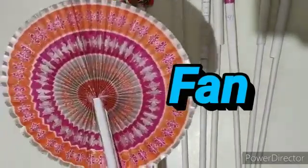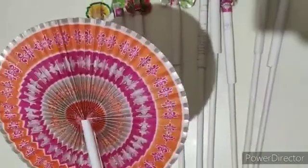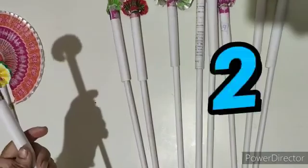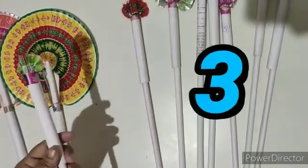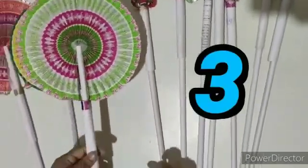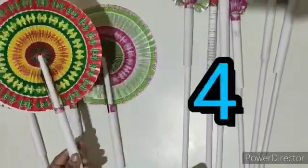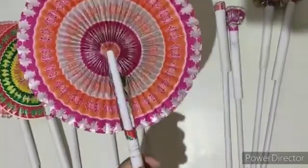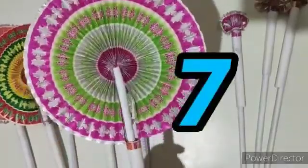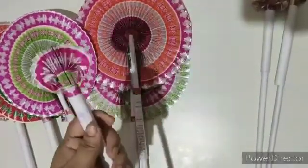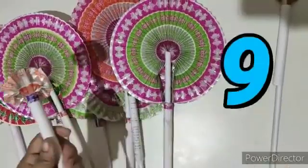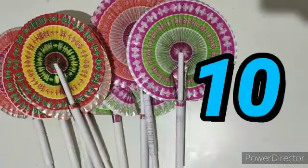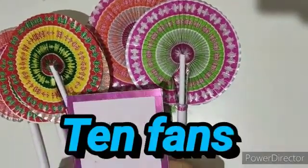What is this? This is a fan. How do we count? 1, 2, 3, 4, 5, 6, 7, 8, 9, and 10. So how many fans are there? There are 10 fans.